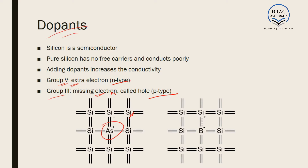In the case of n-type dopants, since it is a group 5 element, the outer shell has 5 electrons. It shares 4 electrons with 4 silicon atoms. As a result, it has one more electron left. This is still electrically neutral, since all the silicon atoms and the dopant are electrically neutral. But there is an excess electron which is not bonded with anything. This electron, with the application of an electric field, can be moved to different places — it can be moved across the lattice. The movement of this electron creates current, and this is called an n-type dopant.